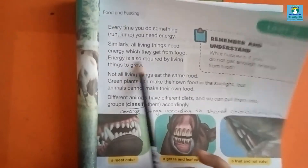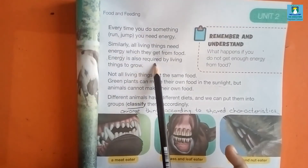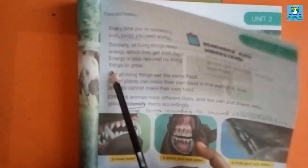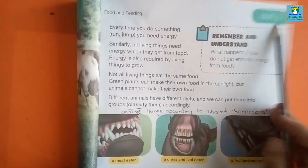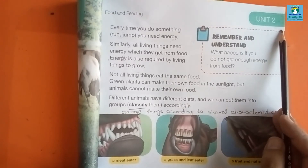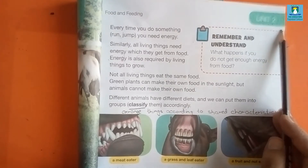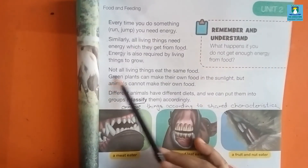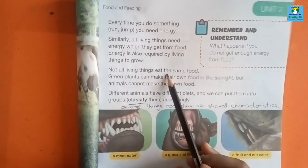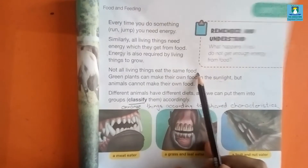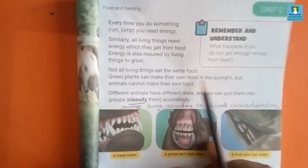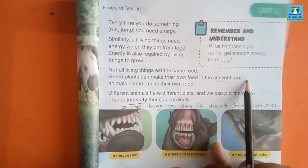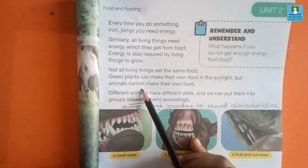Energy is also required by living things to grow — it helps in the growth of a living thing. Not all living things eat the same food. Green plants can make their own food in the sunlight, but animals cannot make their own food.